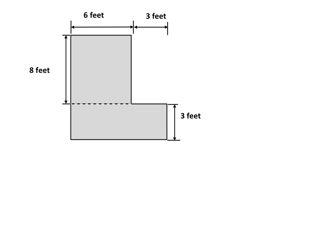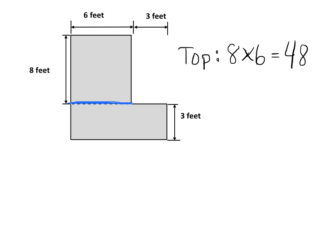We're going to imagine cutting this big figure into two smaller rectangles — one on top and one on the bottom — find the two areas, and then add them together. For the top rectangle, we can see that one side length is eight and the other side length is six.